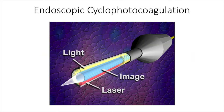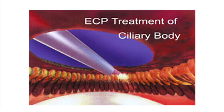ECP typically involves a probe that provides laser energy, a camera for imaging, as well as a light source. The approach is to enter the eye through a clear corneal incision, underneath the iris, and then approach the ciliary processes for applying energy.